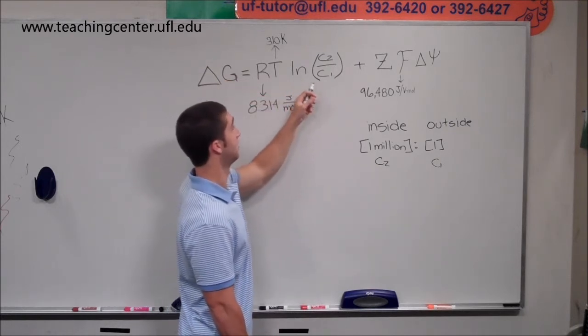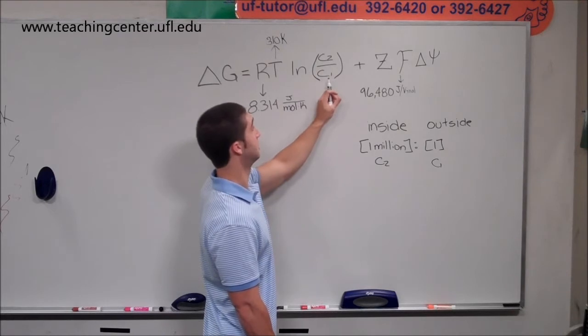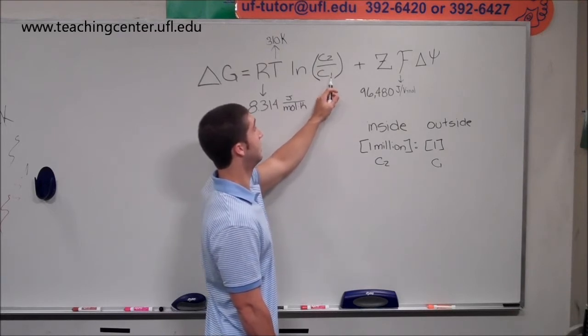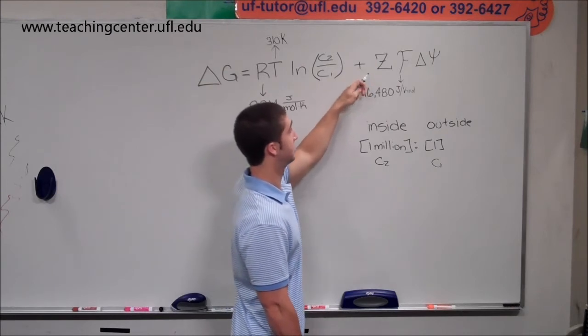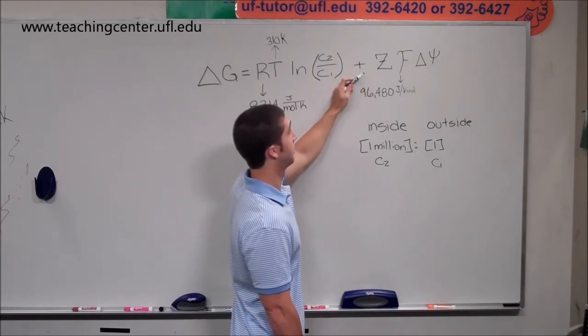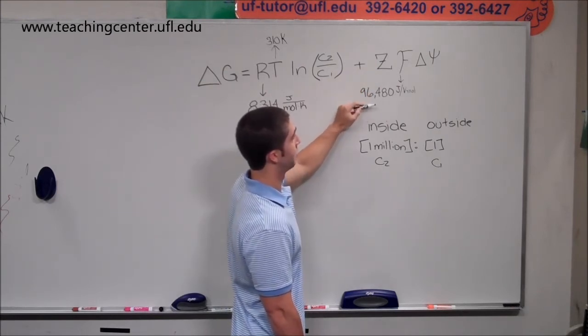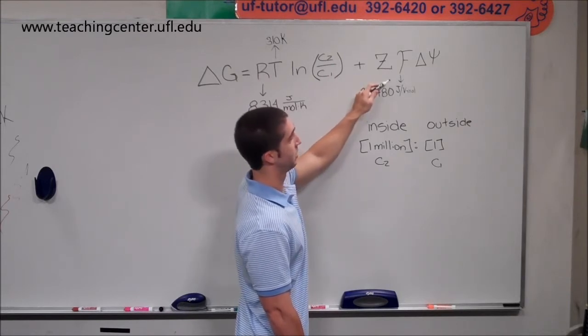Times the natural log of C2 over C1. C1 is the concentration of where you're starting at. C2 is where you're going to end up at. Plus, the Z, which is the charge of the species you're talking about, times Faraday's constant, which will also be given, times the membrane potential.